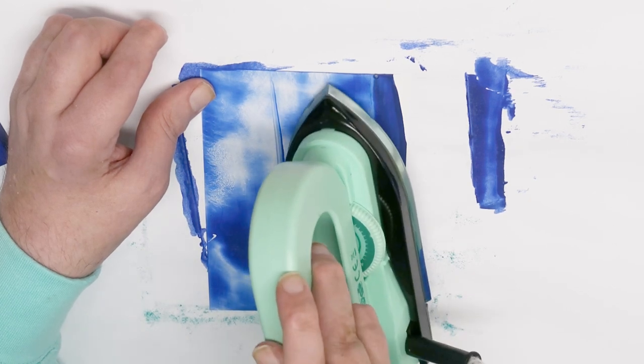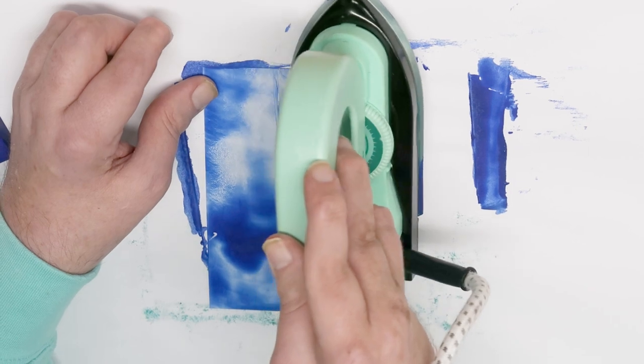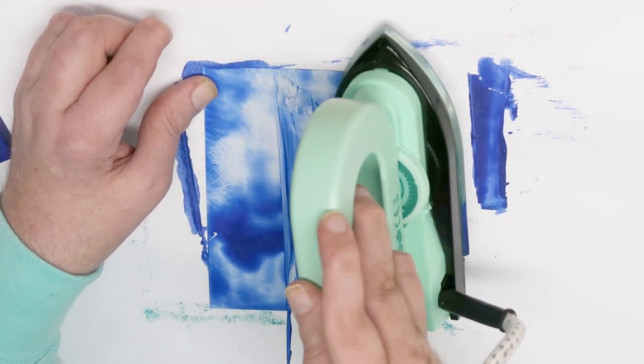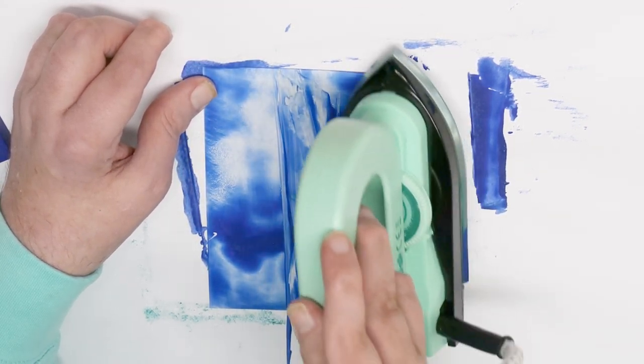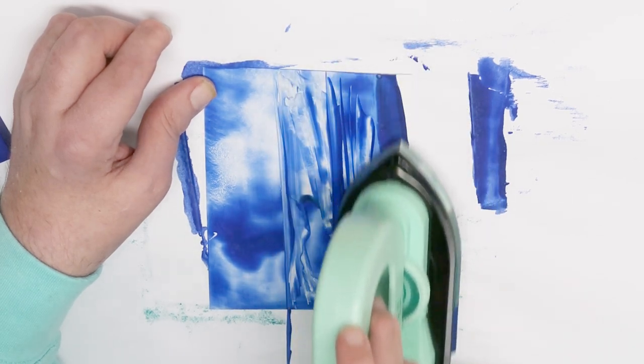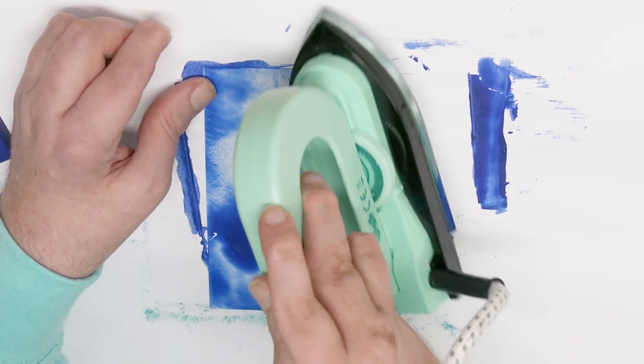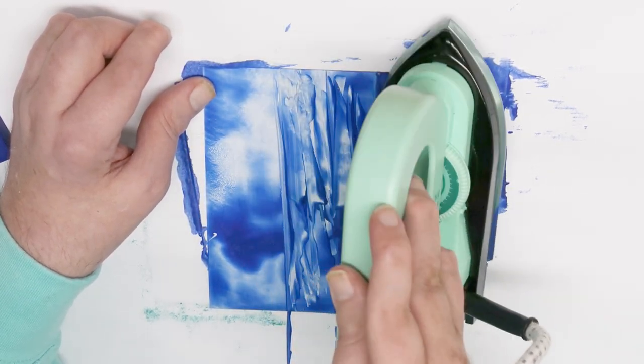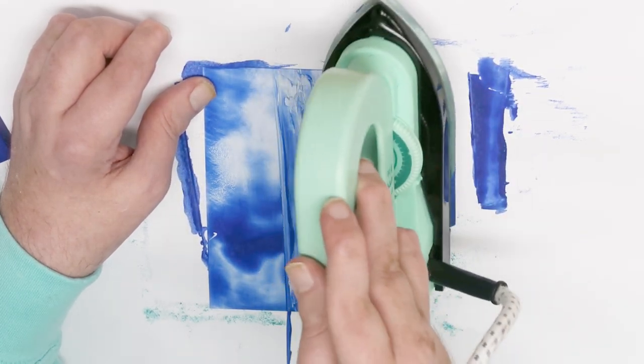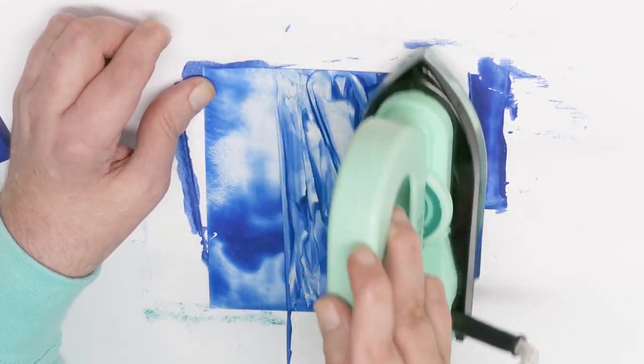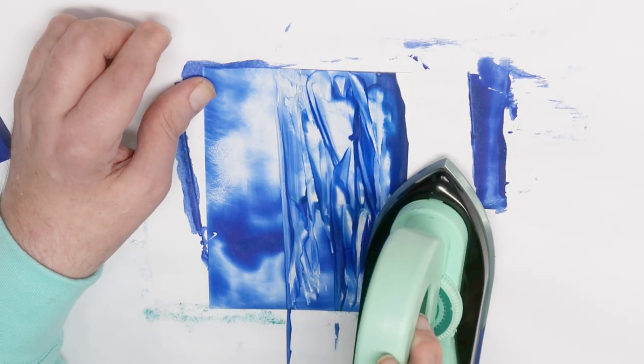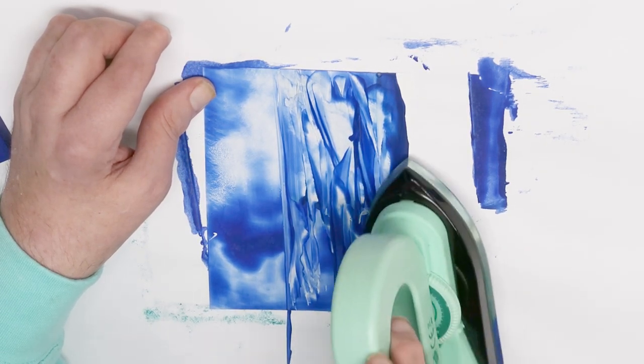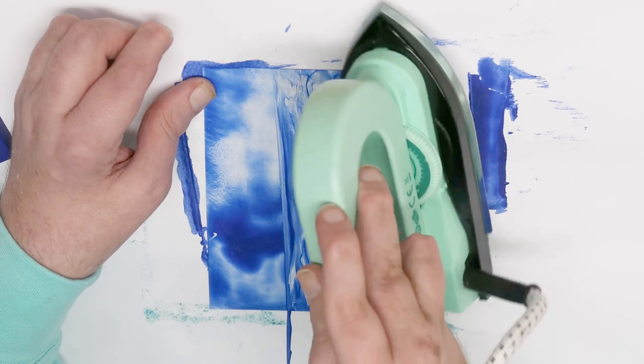And then I'm just going to jiggle the iron around, tapping, doing lines, bending the iron a little bit. I've just got the iron set around the low mark on the temperature setting.